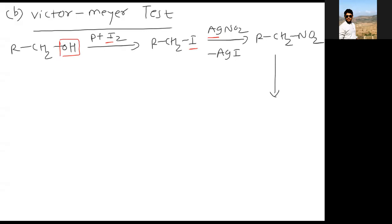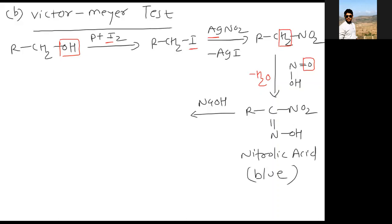Further we'll add HNO2, so H2O is removed. We'll get R-C(NO2)=NOH. This is called nitrolic acid, which is blue colored, and by addition of base it appears red. It is sodium nitrolyte. So overall, primary alcohol on Victor-Meyer test gives red color.